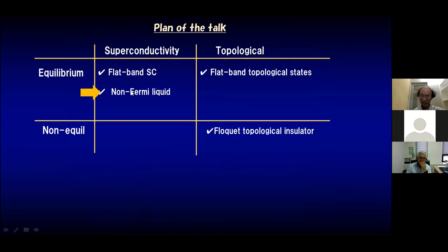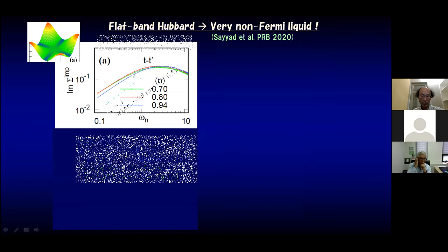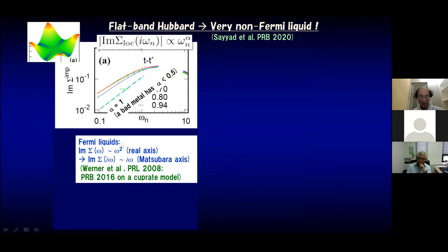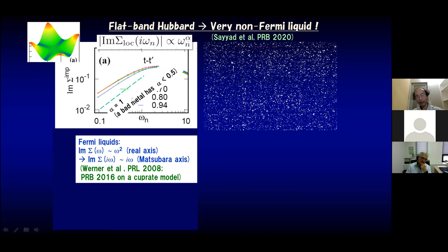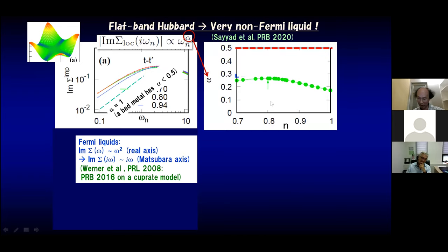How about non-Fermi liquid? We looked at the imaginary part of the self-energy on the Matsubara axis. Everyone knows the Fermi liquid has imaginary part of the self-energy proportional to omega squared on the real frequency axis, meaning the Matsubara axis imaginary part is proportional to omega. But if the exponent is smaller than 0.5, we call the system a bad metal. We calculate this exponent and find it is well below 0.5, so we do have a non-Fermi liquid here.